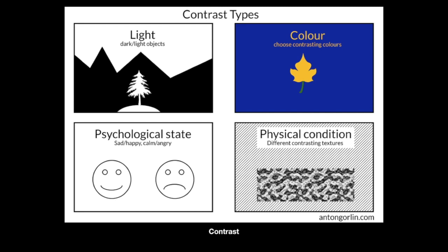We talked briefly about contrast in the last lecture series when we talked about the grammar of photography. Contrast is one of the most fundamental and most important rules you can follow. To make an image expressive, you need a little bit of conflict or contrast between and among objects in the frame. In the last lecture, we talked about value contrast — the contrast between light and dark objects — and color contrast. But you could also focus on psychological state contrast or physical condition contrast.